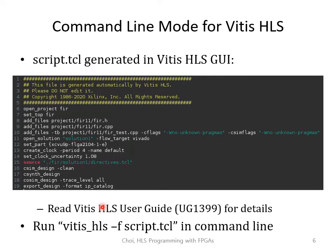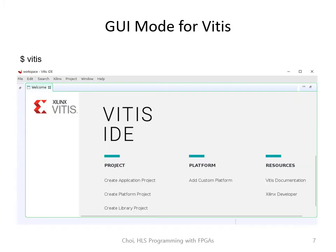If you choose to run the script in command line, you can run it as-is, or comment out parts you don't need, such as CSIM or COSIM. Type 'vitis_hls -f script.tcl' in the command line to run Vitis HLS without the GUI. For Vitis, you can also use GUI mode by typing 'vitis' in your Linux console and the Vitis IDE GUI will pop up. The key message is that both Vitis and Vitis HLS offer command line and GUI modes, and you can choose whichever is more convenient.